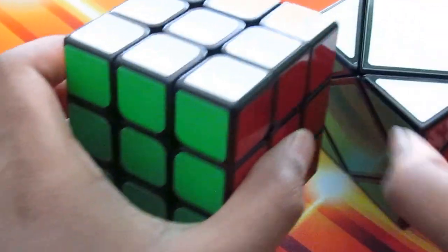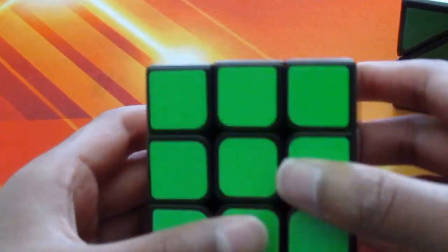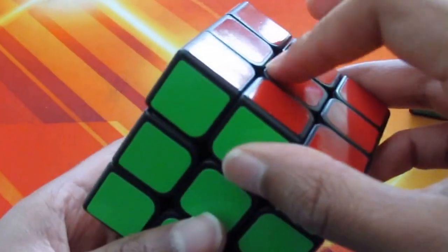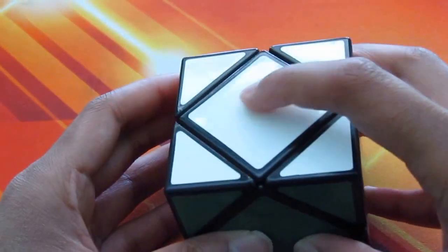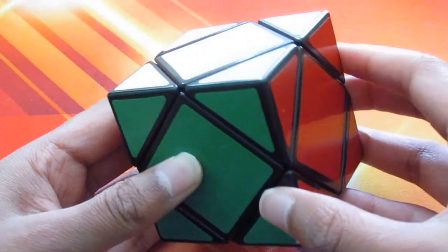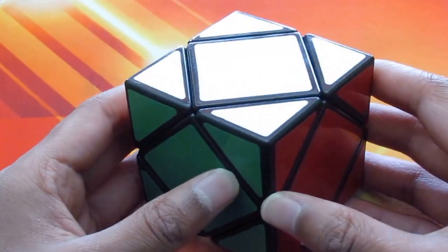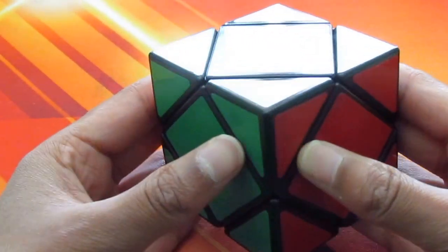With a Rubik's Cube you hold green in front of you, white on top, and red on the right side. And with scube you're gonna hold green in front of you, white on top, and red just like the same, just like this Rubik's Cube.